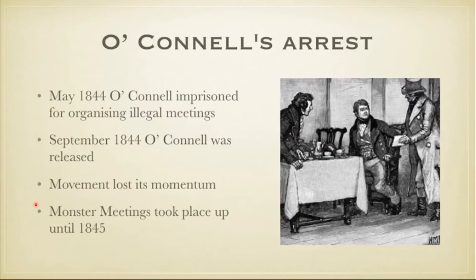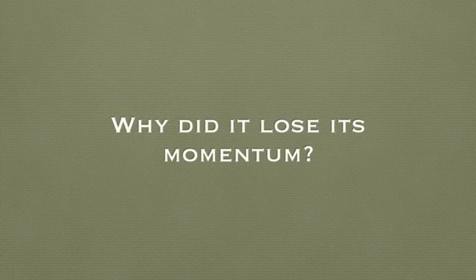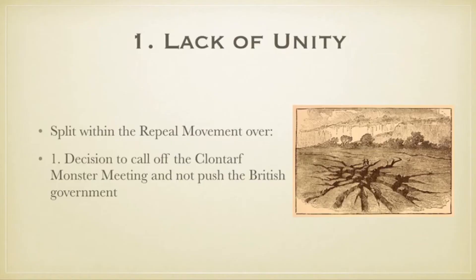One final monster meeting took place after O'Connell was arrested, in 1845. There were two main reasons for the split in the repeal movement. First, the lack of unity — the split within the repeal movement arose over the young idealists' decision to call off the Clontarf monster meeting and not push the British government. Some people saw this as a weakness and as cracks in O'Connell's ideals, believing he should have continued with the Clontarf meeting regardless of the risk of fighting.